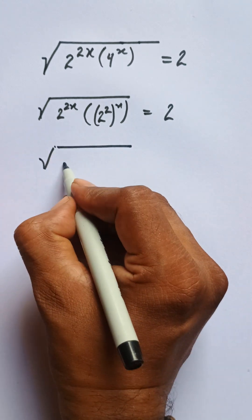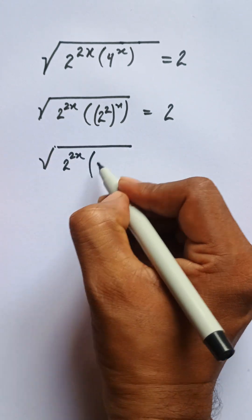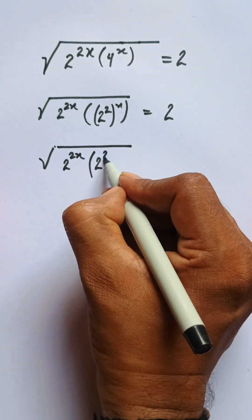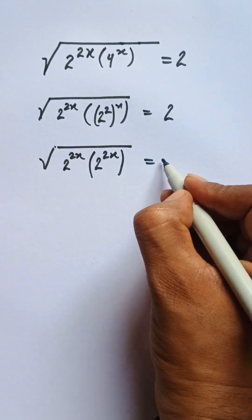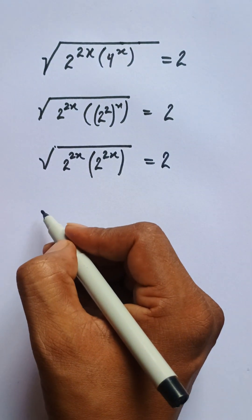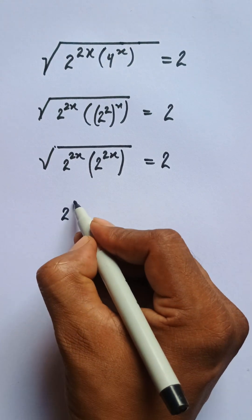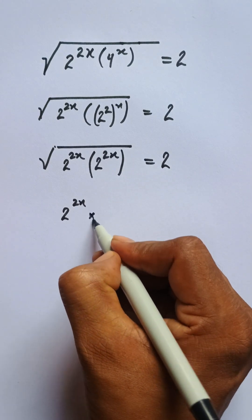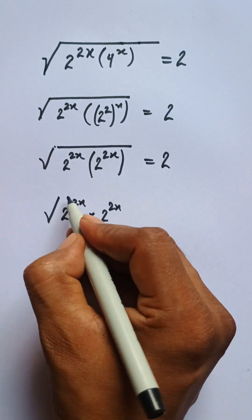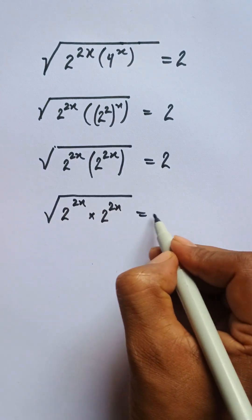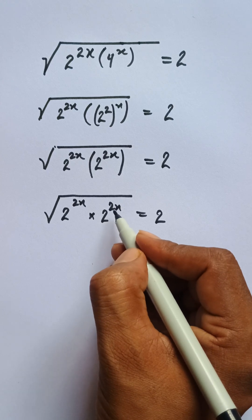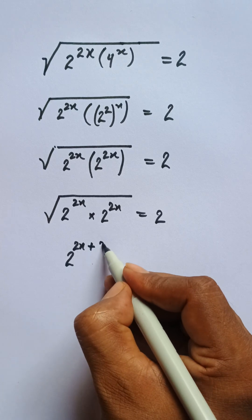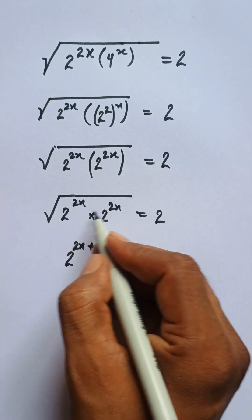We have 2 to the power 2x as it is, and I can write 2 multiplied by x just as the power of 2. So we have 2 to the power 2x multiplied by 2 to the power 2x. Since the bases are the same, we can add their exponents together — written as 2 to the power 2x plus 2x.